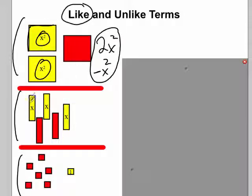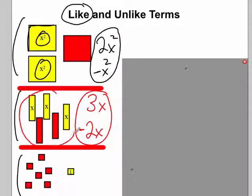Next we have an x by one strip. So that's what we call an x strip. I have three positive x strips, three x, and I have two negative x strips. And those are like terms. The tiles have the same shape. And algebraically the terms have the same variable with the same exponent, in this case an exponent one.